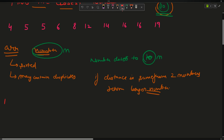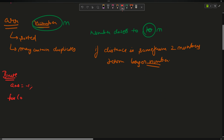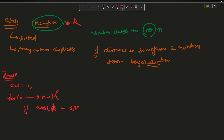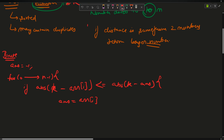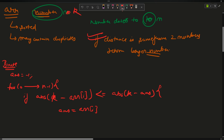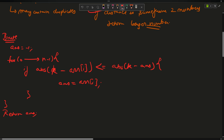The brute force approach is a simple traversal. Set the answer to -1 initially, then traverse from index 0 to n-1. If the absolute difference |k - arr[i]| is less than or equal to |k - answer|, update the answer to arr[i]. The 'less than or equal to' handles the tie-breaking rule since we traverse left to right in a sorted array, ensuring we always pick the larger value. After the loop, return the answer.